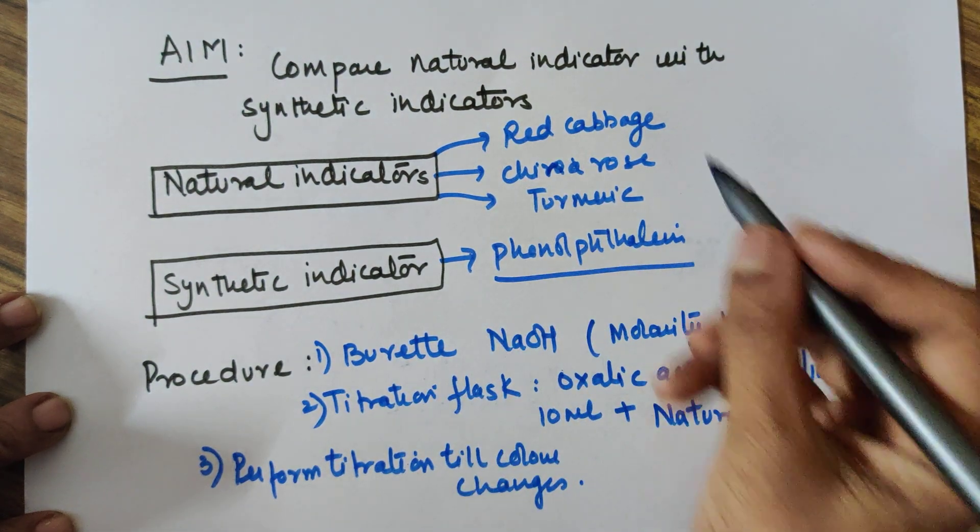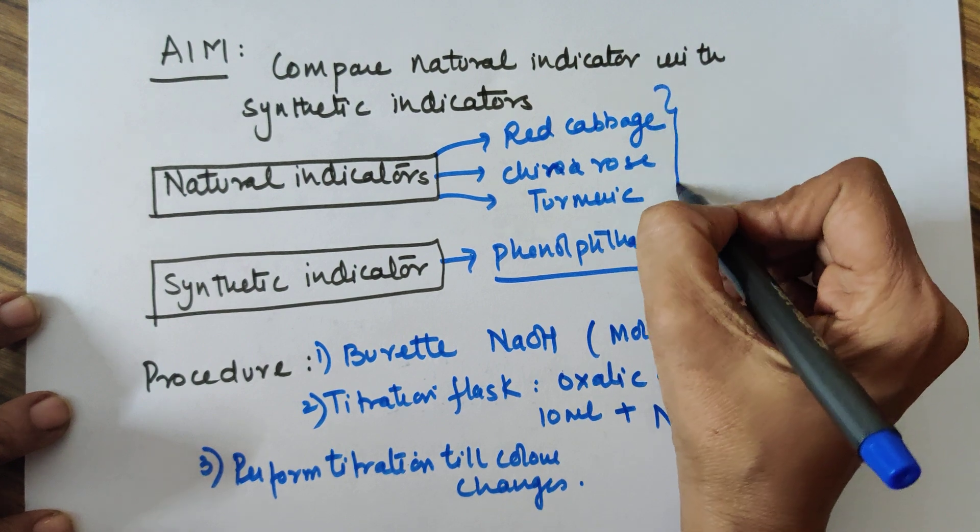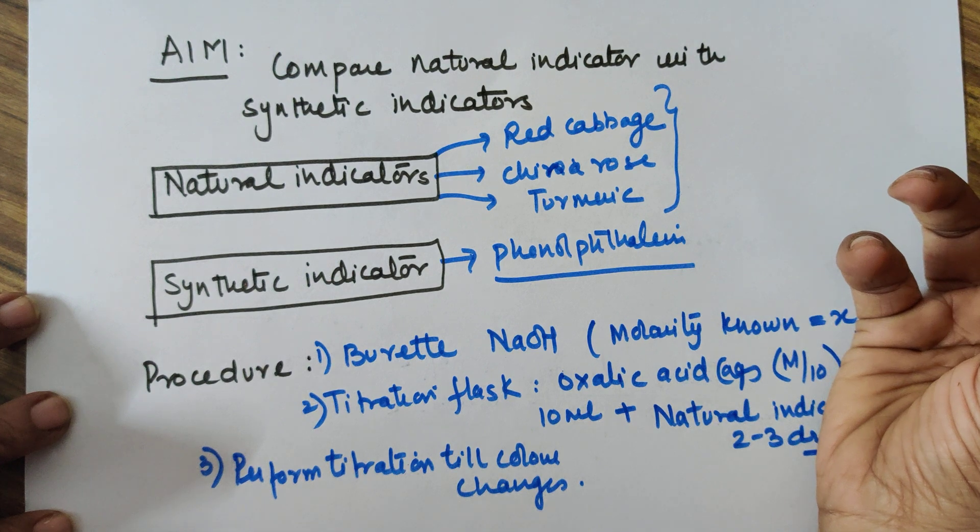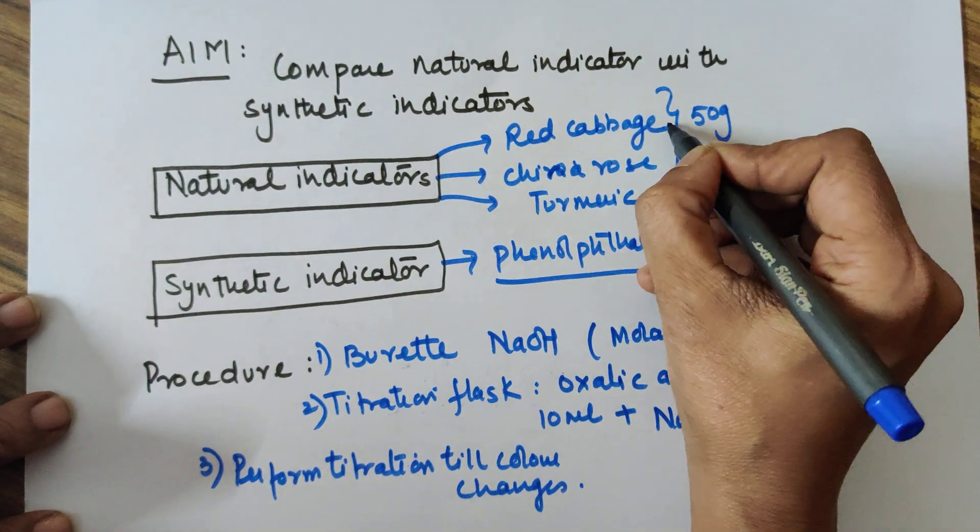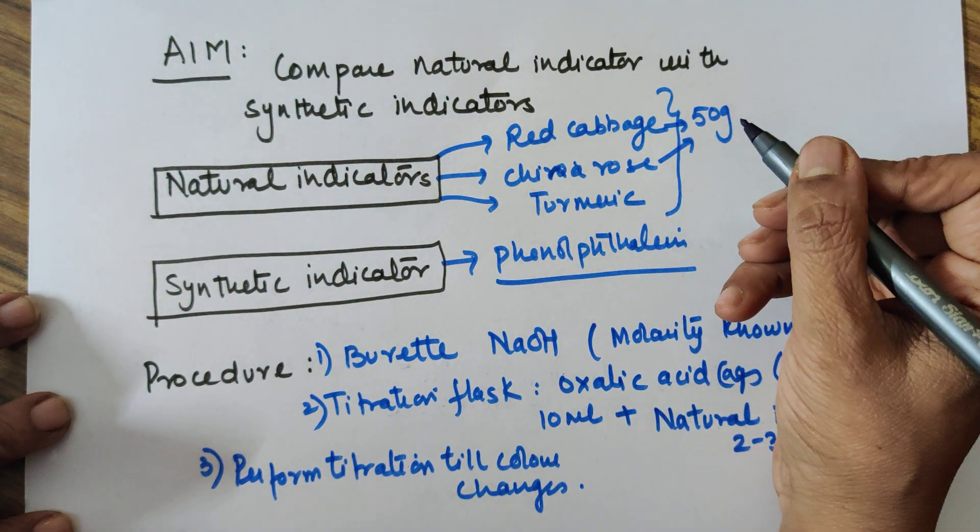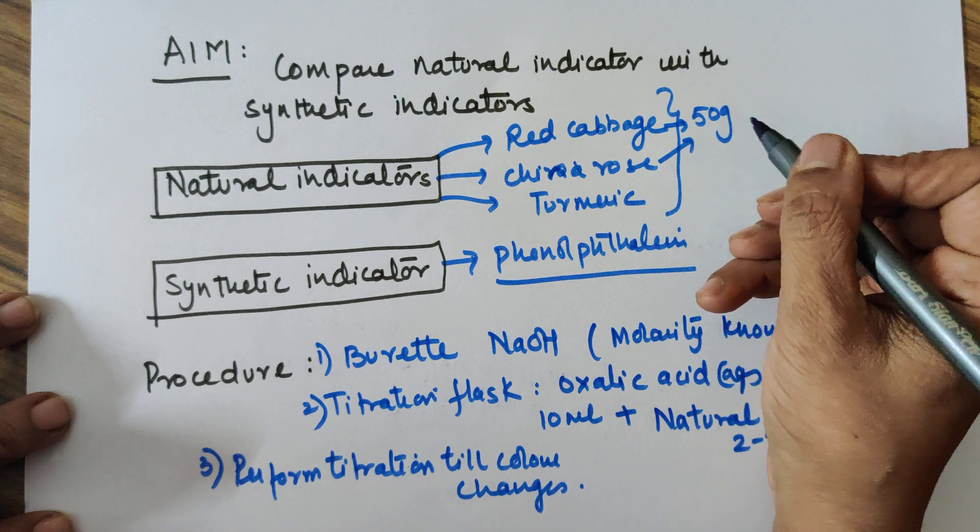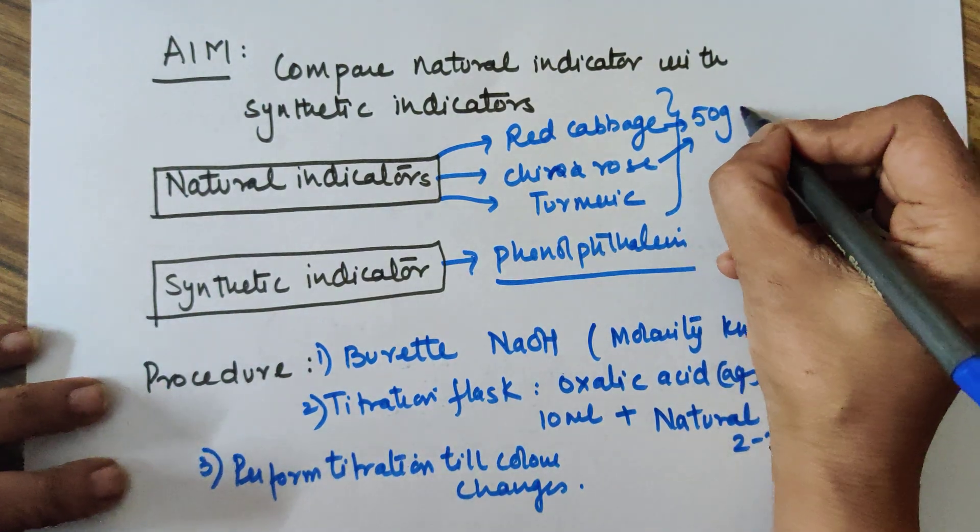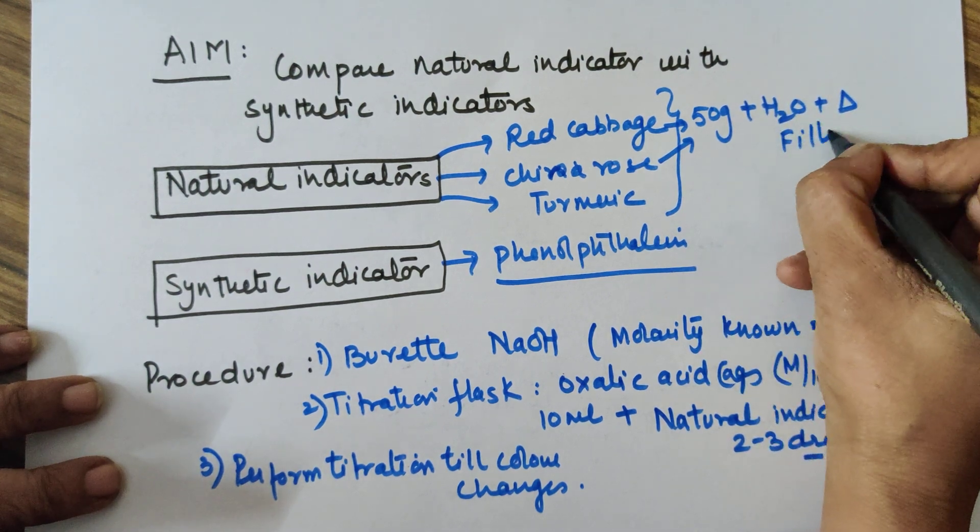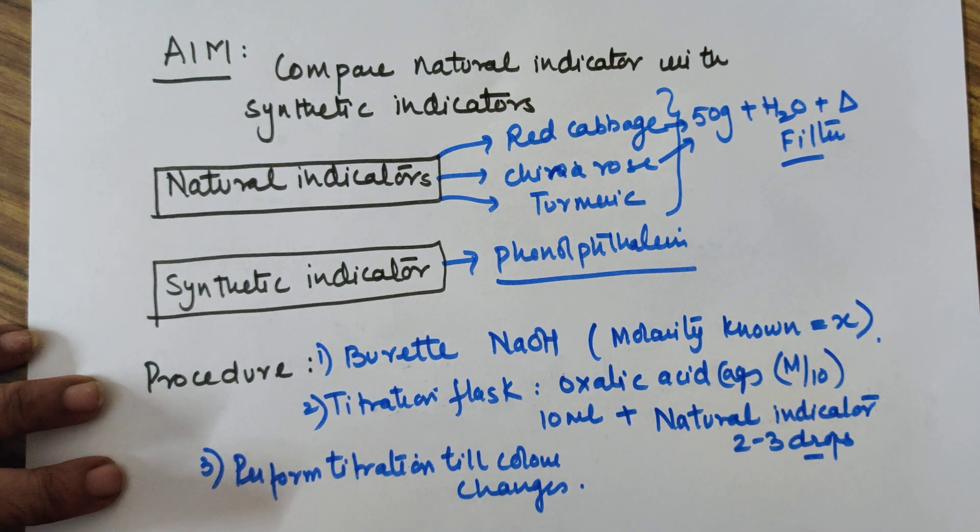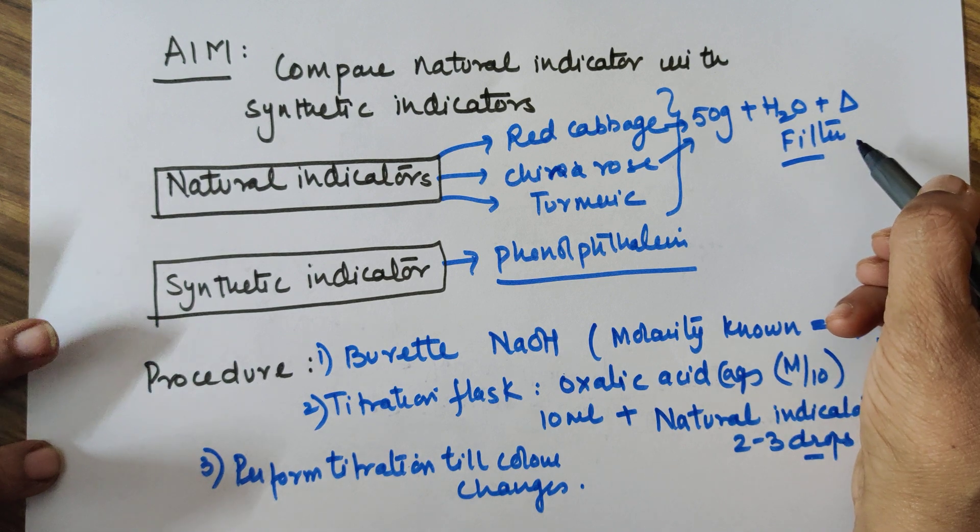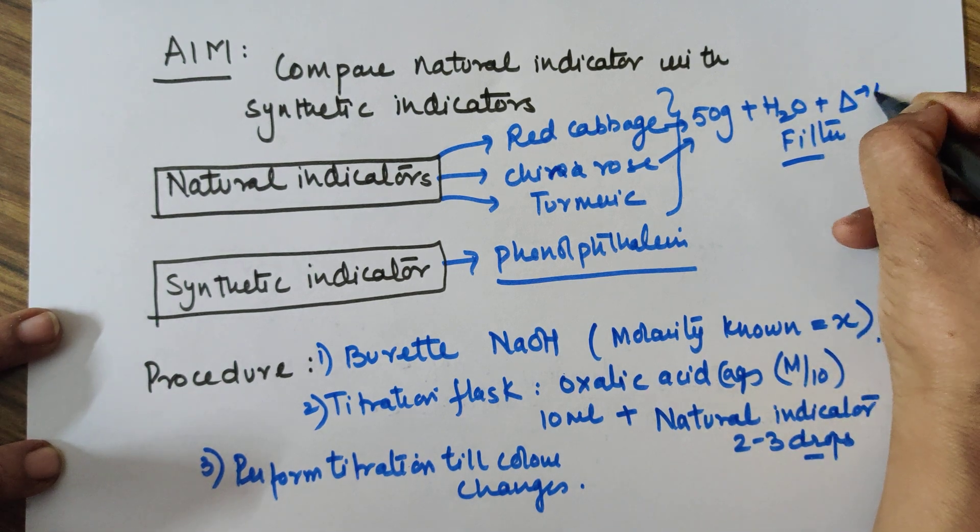Now for these indicators, what do you need to do? Take around 50 grams of red cabbage or China rose, cut it into pieces, then add some water to it, boil it, and then filter it. You can filter it with a tea strainer.